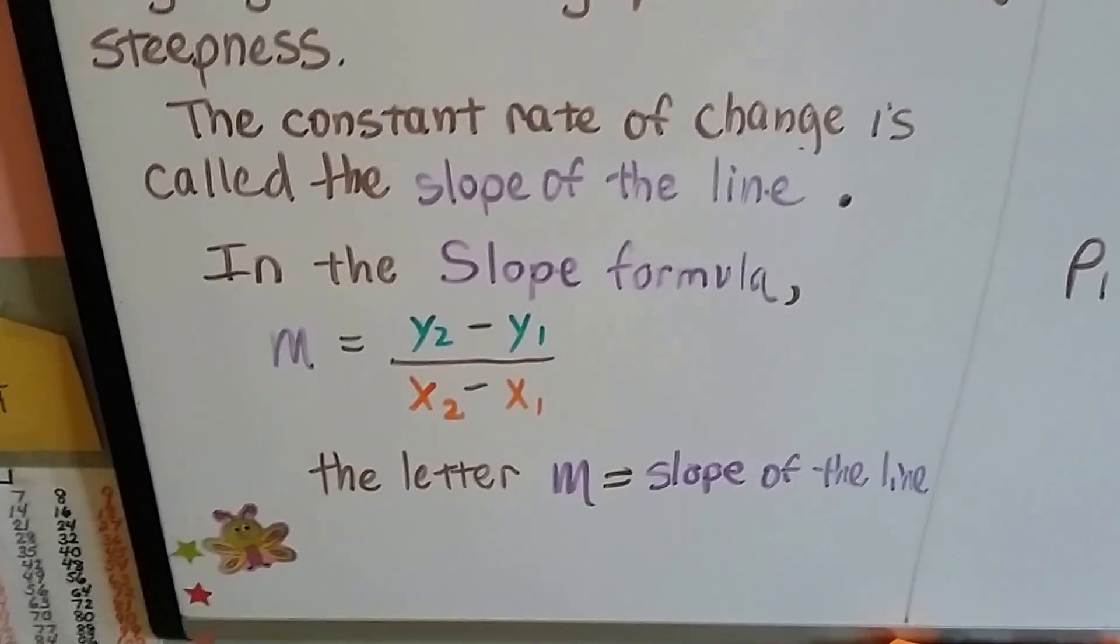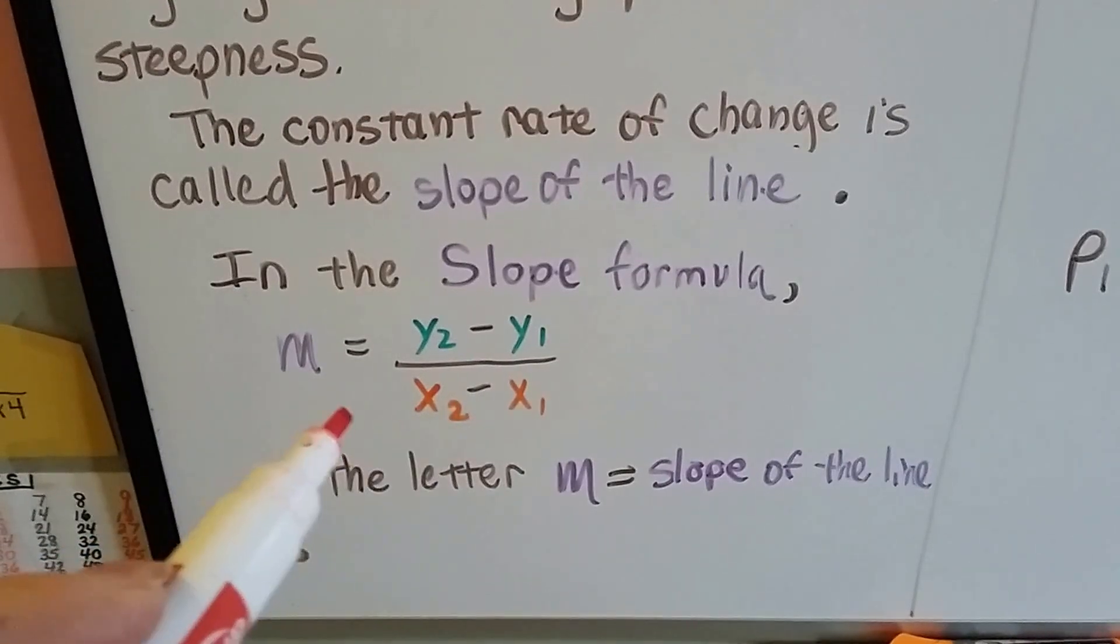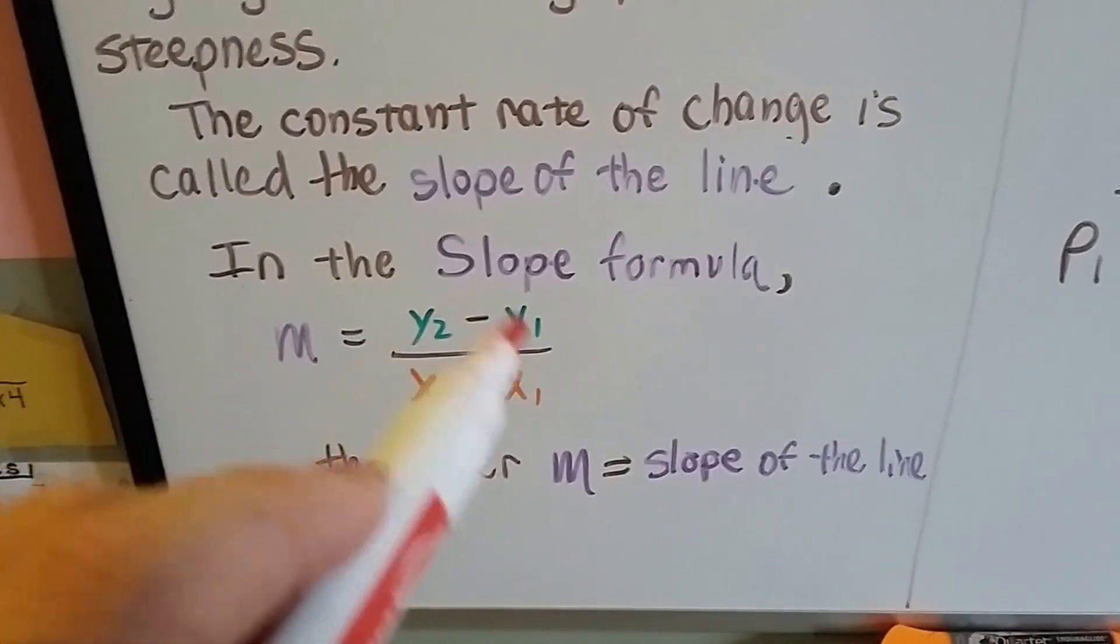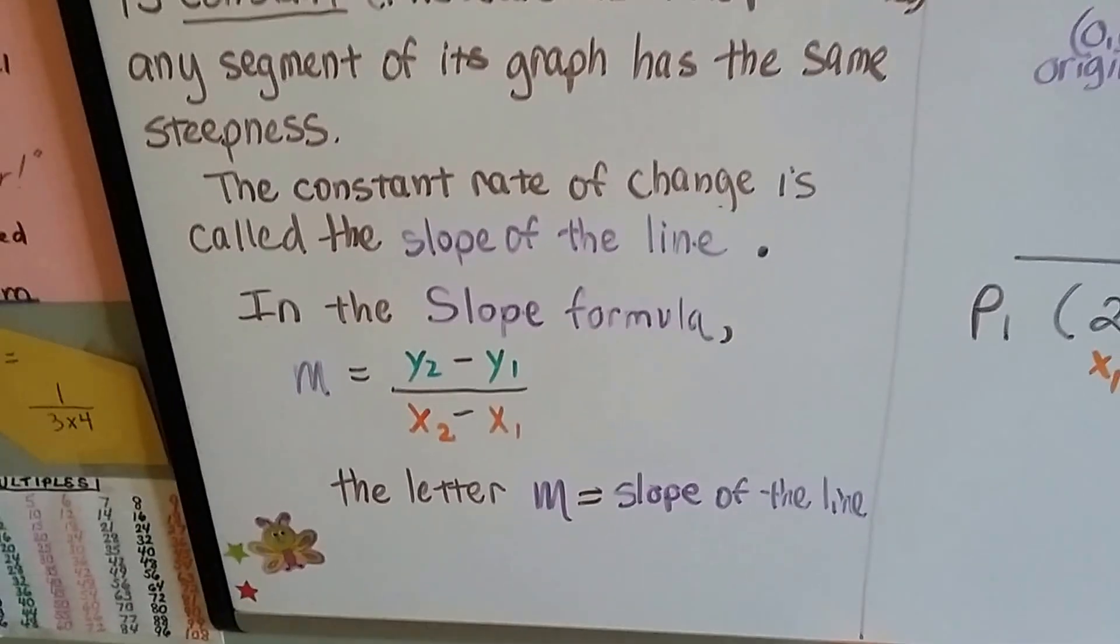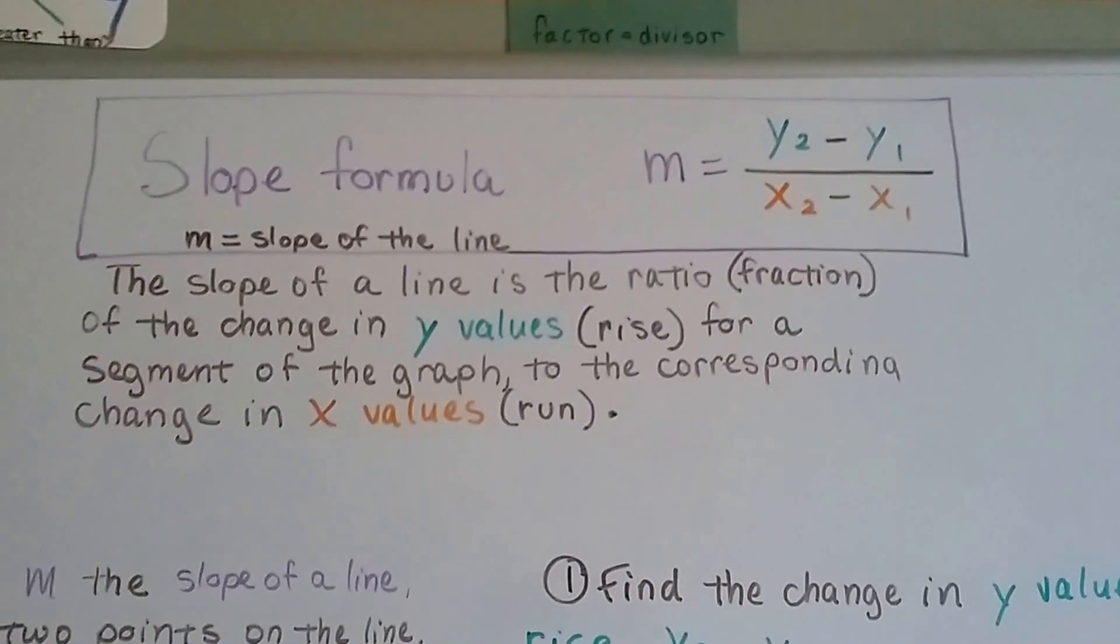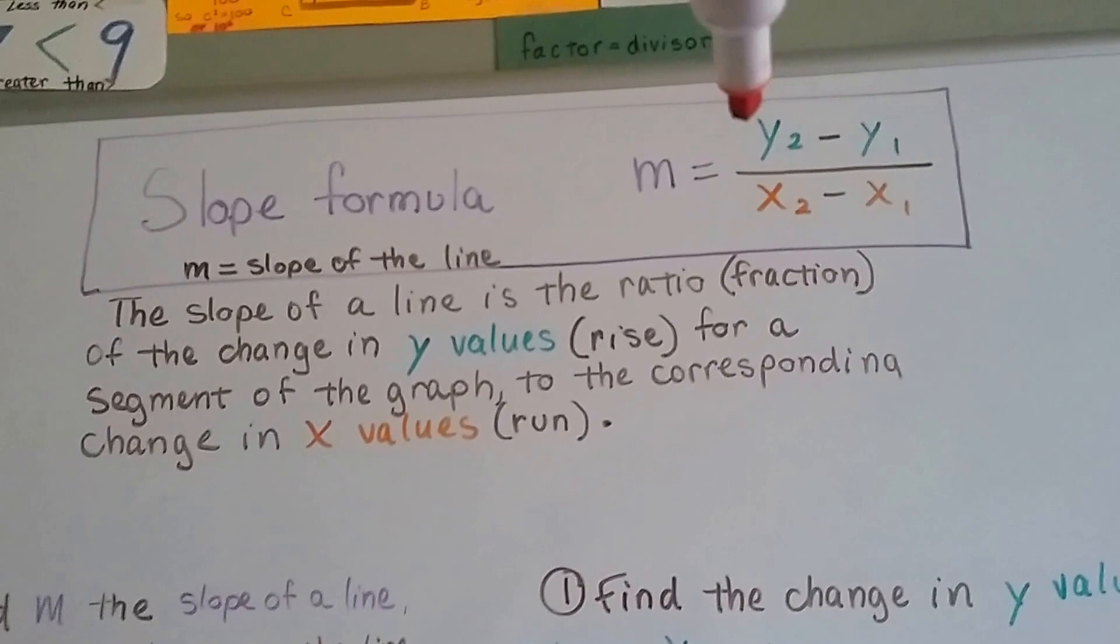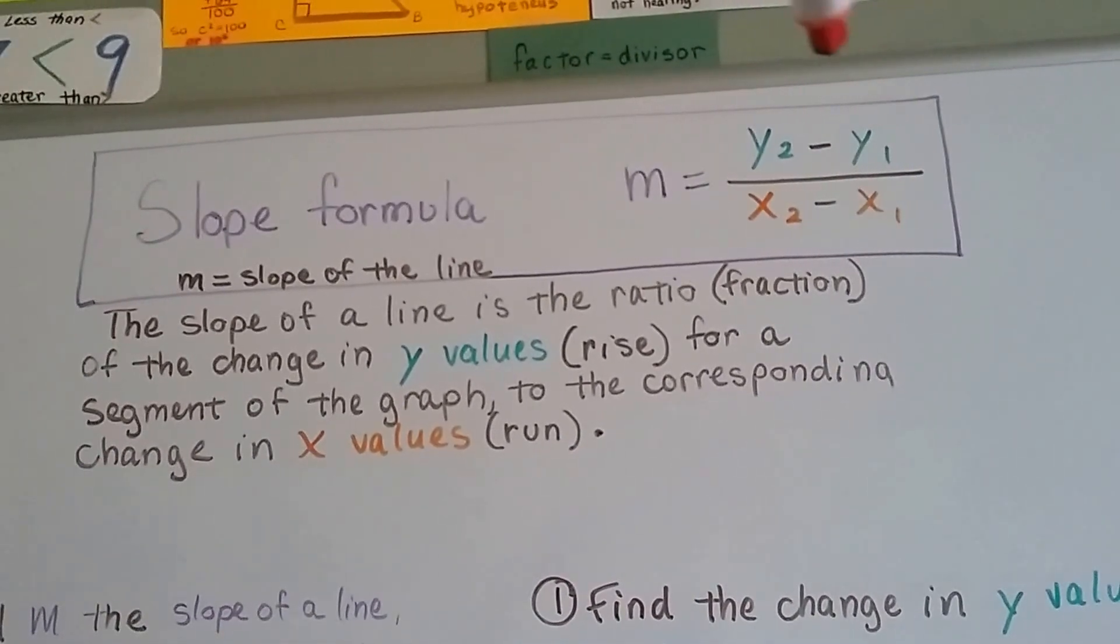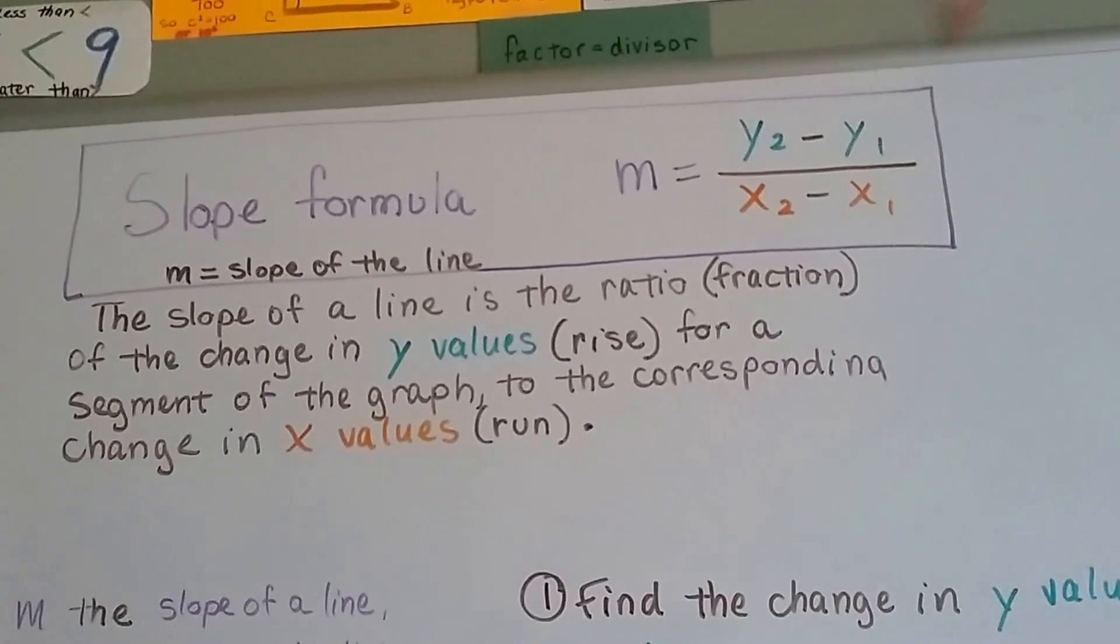In the slope formula, it's m equals y2 minus y1 over x2 minus x1. This letter m stands for the slope of the line. If we can figure out these xy coordinates, we'll know the slope of the line. It'll be the rate of change. So the slope formula is m, the slope of the line, is equal to the y value for point 2 minus the y value for point 1, over the x value for point 2 minus the x value for point 1.